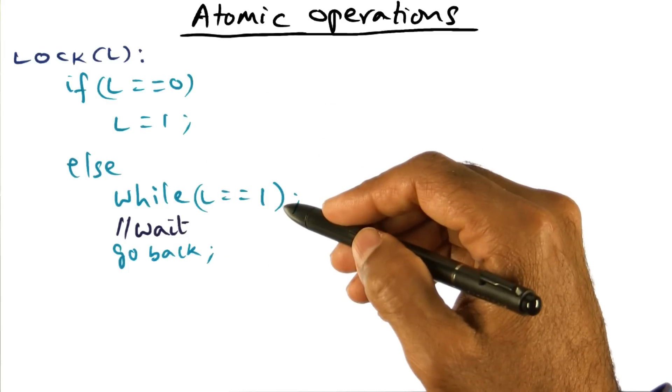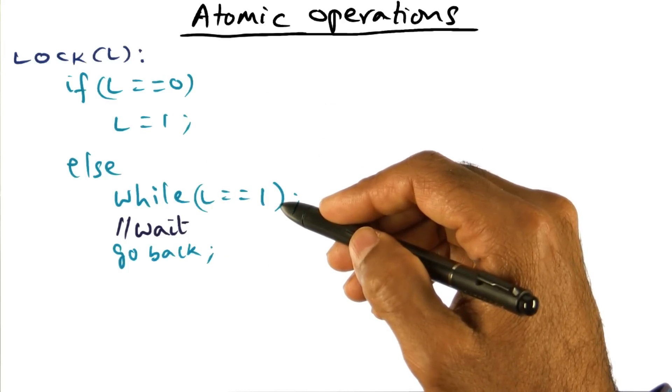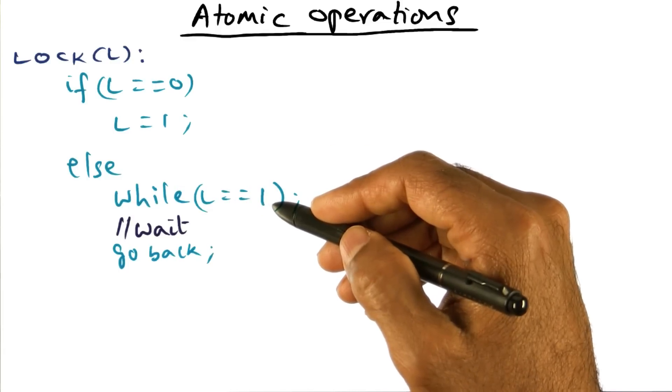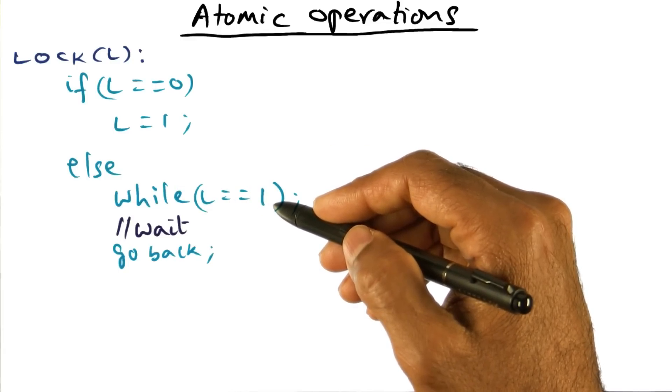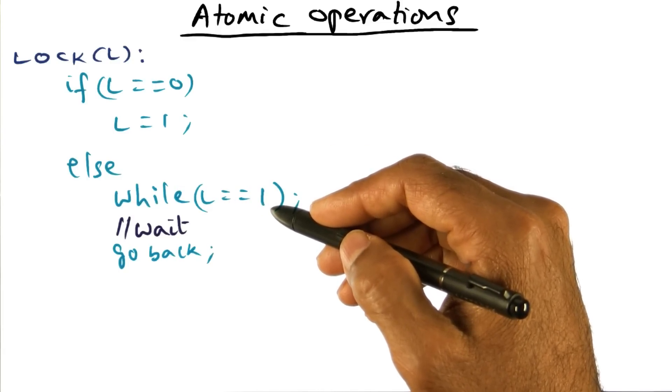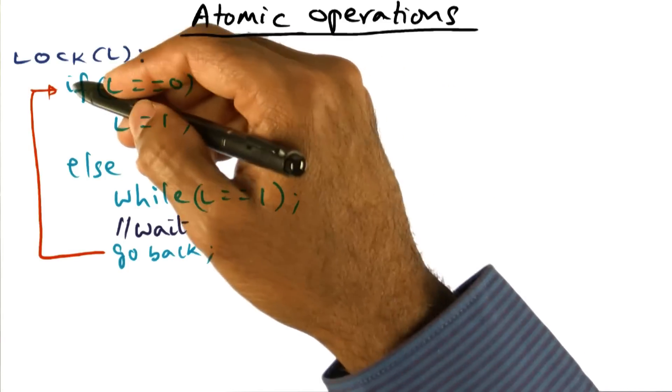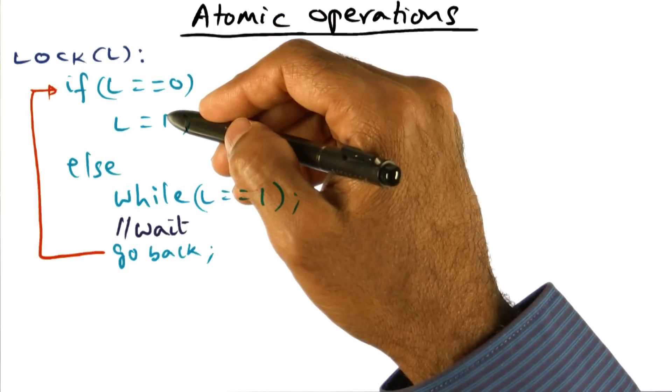On the other hand, if somebody already has the lock, L is going to be one, and therefore I'm going to wait here until the lock is released. And once the lock is released, then I can go back and check again to make sure that the lock is available and set it to one.